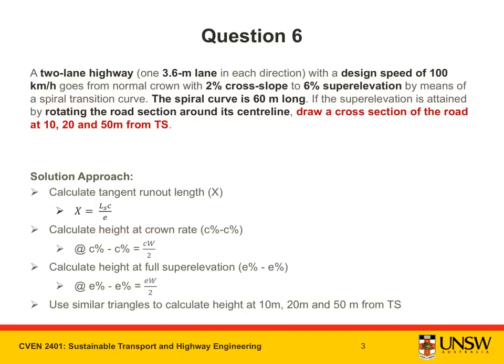The key terms from the question are highlighted. Our solution approach is to: calculate the tangent runout length, calculate the height at crown rate, calculate the height at full super elevation, and then using these known values we can use similar triangles to calculate the height at 10 meters, 20 meters, and 50 meters from TS.